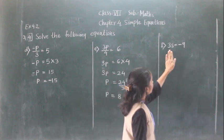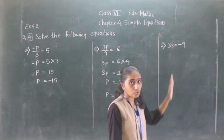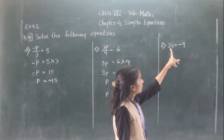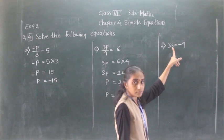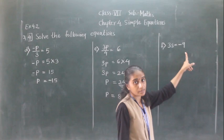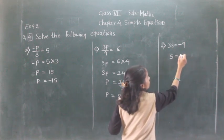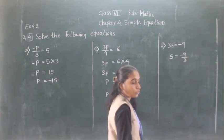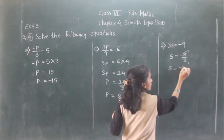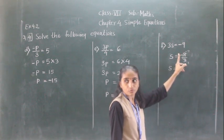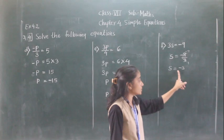Question F: 3s = minus 9. We need to separate the variable. 3 is multiplied with s, so we transfer 3 to the right-hand side where it becomes division. So s = minus 9 divided by 3. One number is negative and the other is positive, so the result is negative. Therefore s = minus 3.